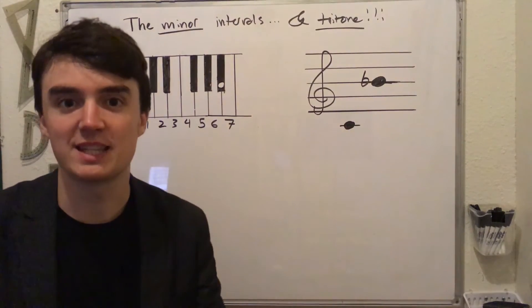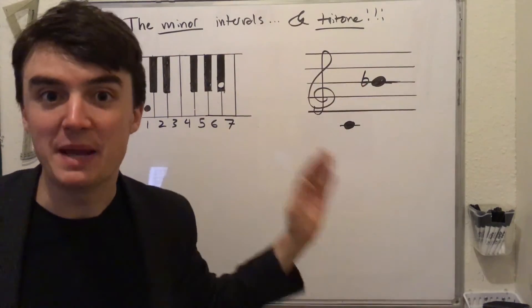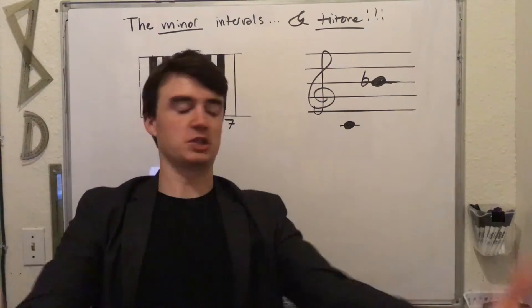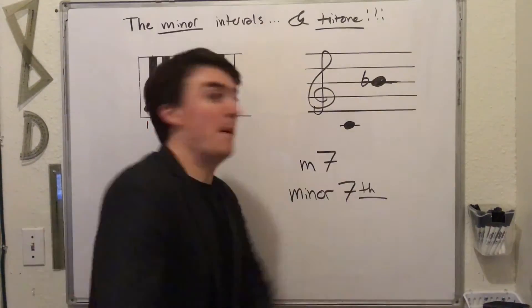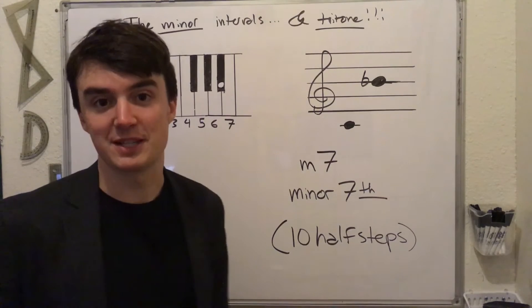A normal seventh in a major scale is a major seventh. A flat major makes it minor. So say it with me. Count to three. One, two, three, bananas. Gotcha. A minor seventh. It's ten half steps from the starting note.